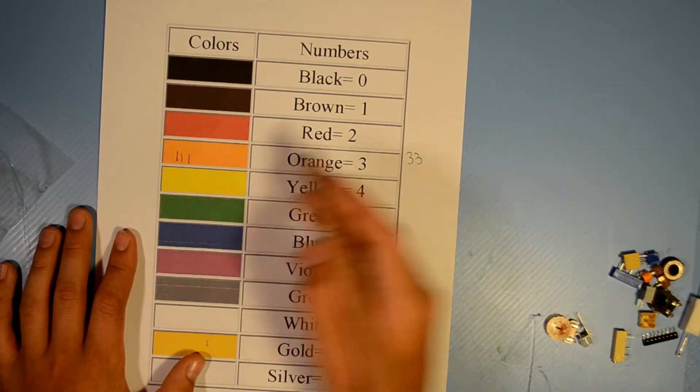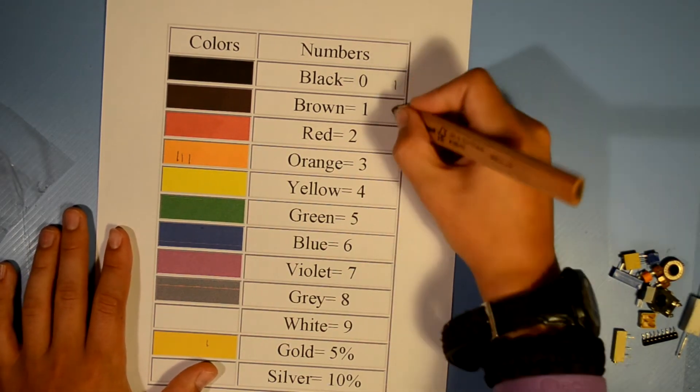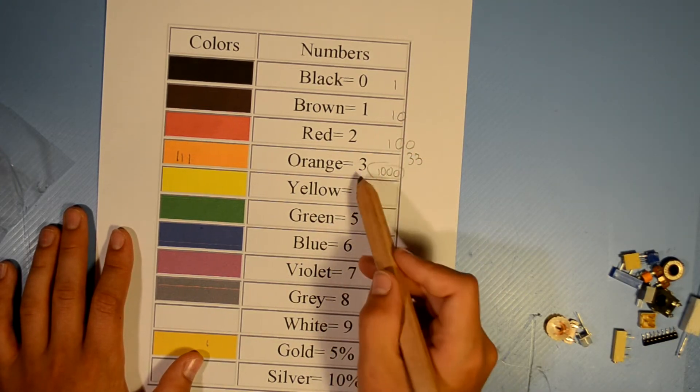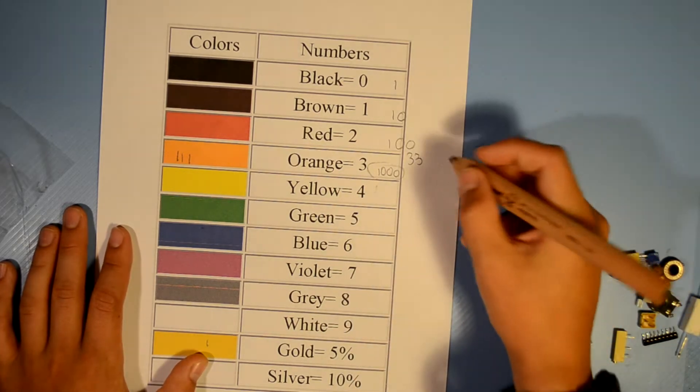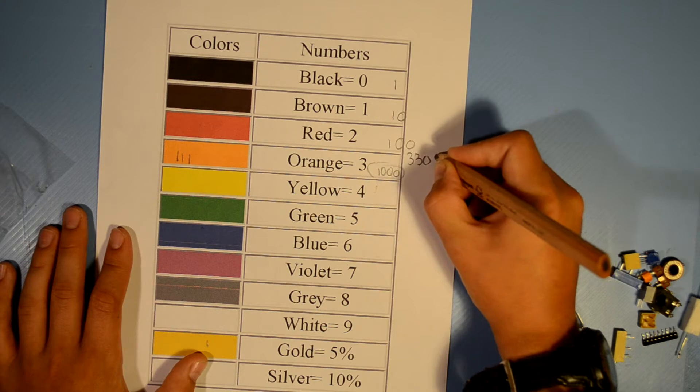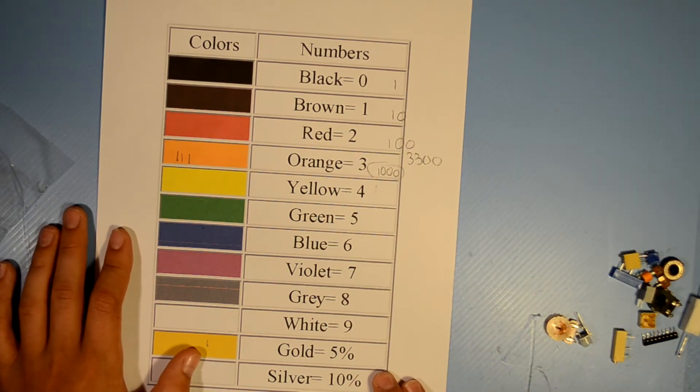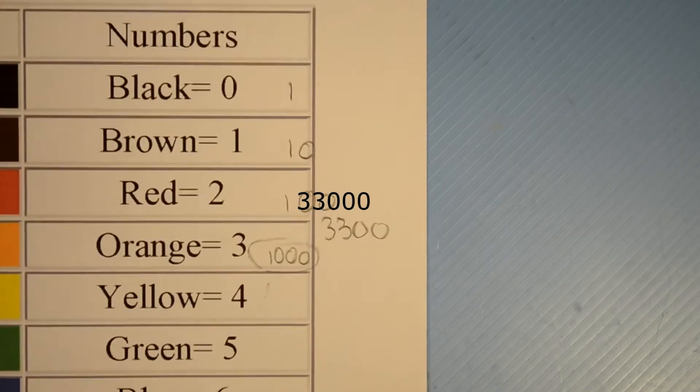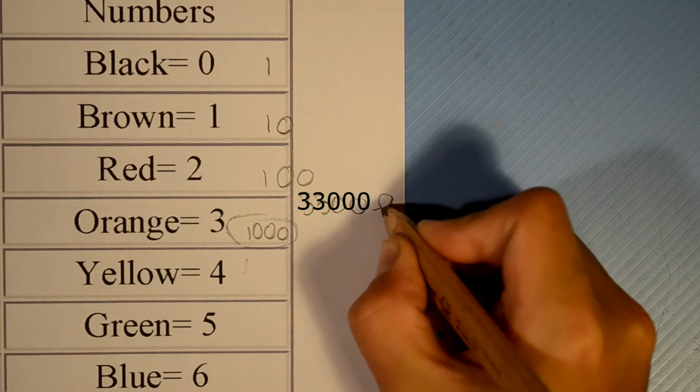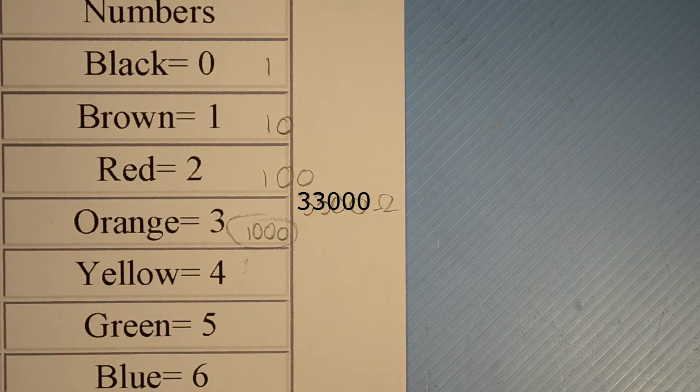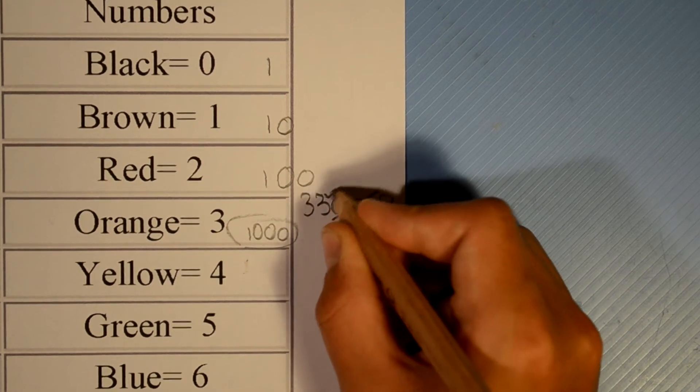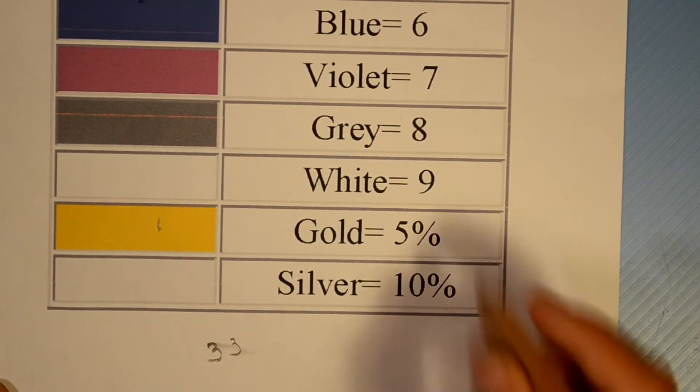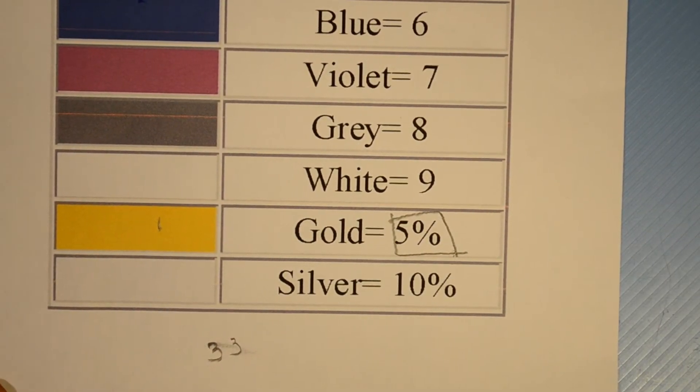And then for the last one, you're going to imagine, okay, one, ten, one hundred, and one thousand. And you're going to multiply it by, in this case, one thousand, because it's orange. So, I'll get you 3,300. Which is 3,300 ohms, which is actually 33K. And the gold band means that it has 5% accuracy.